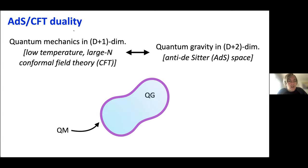So what is this duality specifically? It's a duality between, on one hand, quantum mechanical theories in d plus one dimensions — that's d space dimensions and one time dimension — and on the other hand, theories of quantum gravity in one higher dimension, so d plus one space dimensions and one time dimension. Intuitively, one thinks about this quantum mechanical theory as living on the boundary of the gravitational spacetime.